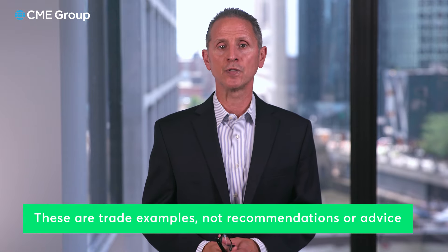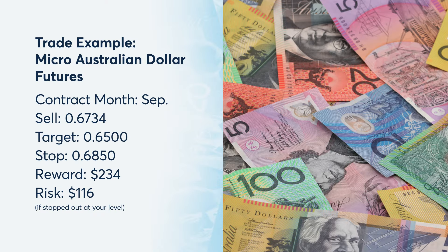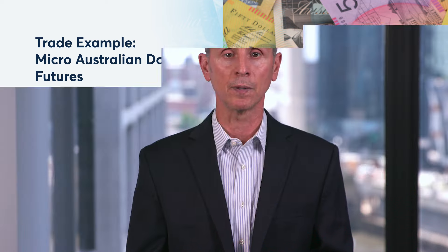If a trader believes the Australian dollar could break from here, they could sell the September micro Australian dollar futures contract at 0.6734 and target a move back to the May lows of 0.6500. A stop for this trade could be placed above at 0.6850. This trade could make $234 if the target is reached and risks $116 if stopped out at that level.